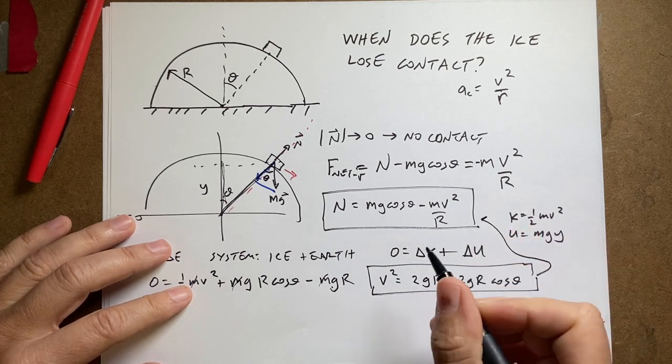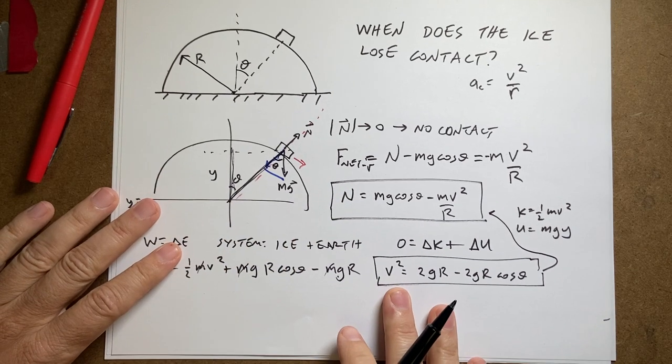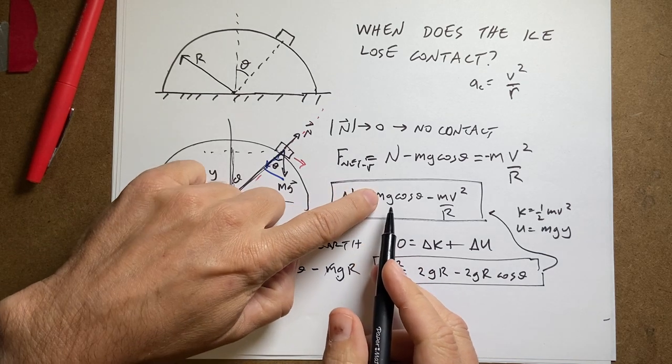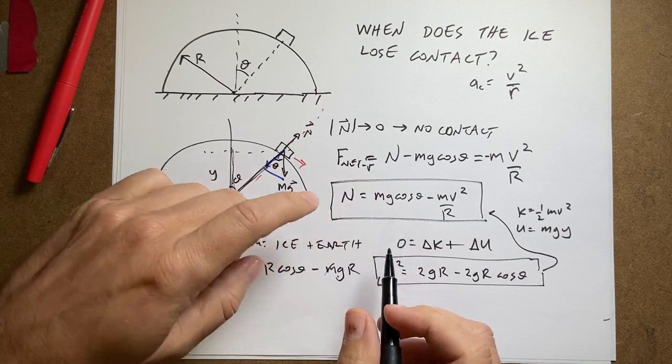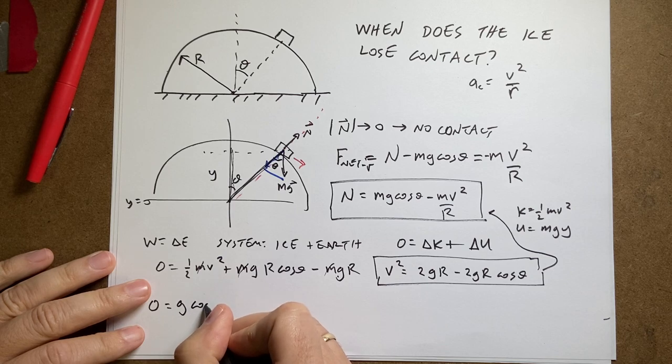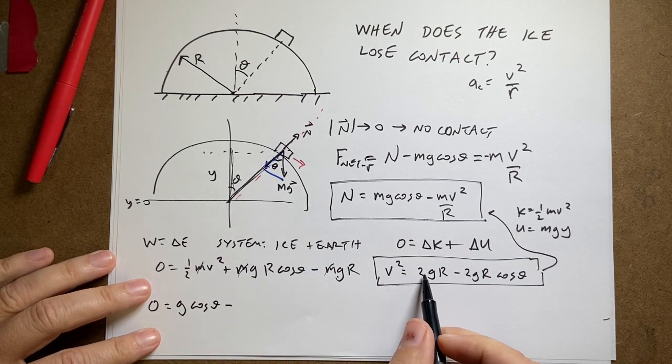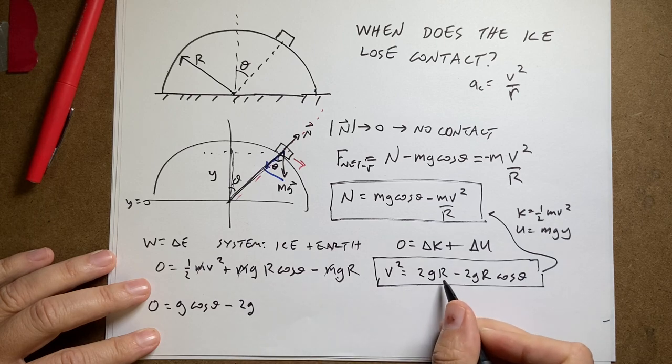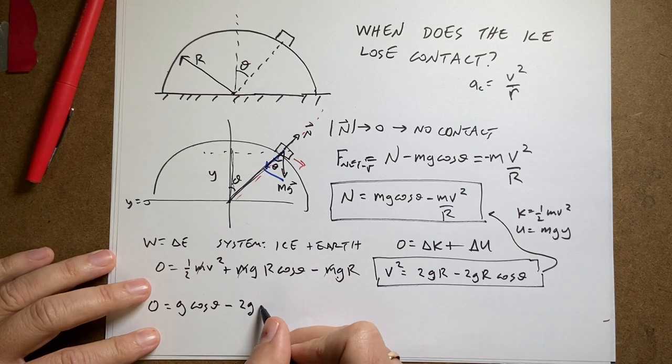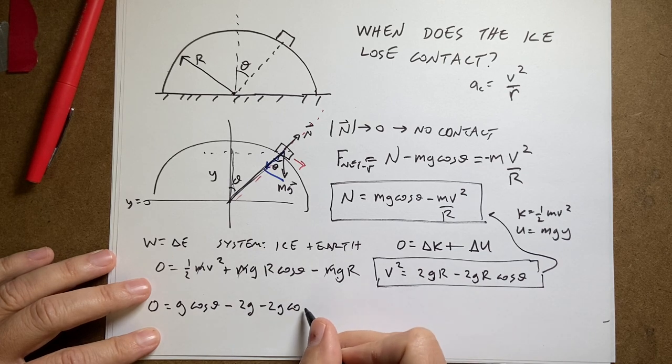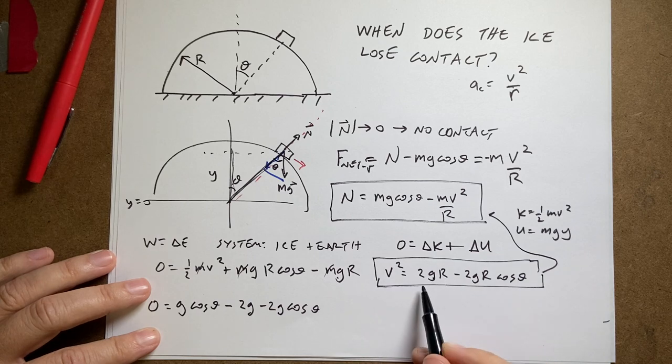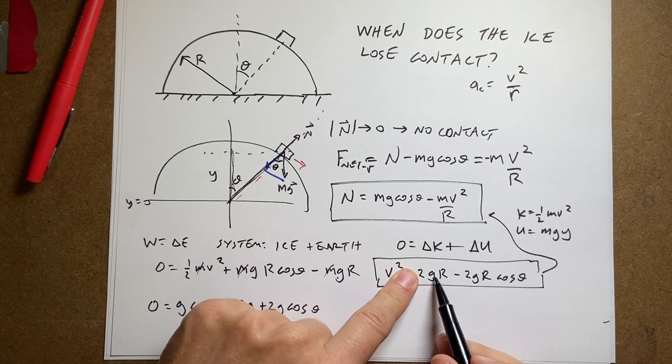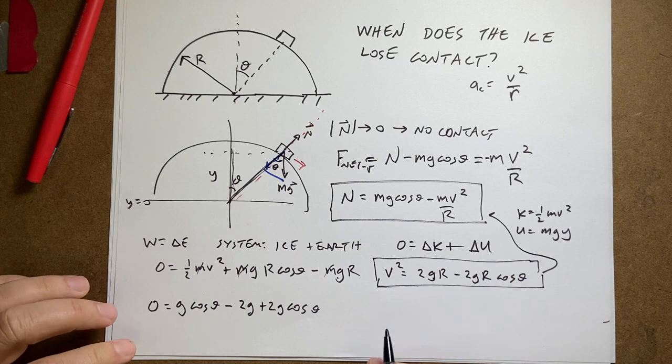So now I can substitute this in up here. And I'm going to set the normal force equal to 0. Because that's when the puck loses contact. So I get 0 equals, and if I put that 0, the m cancels. I can divide both sides by m. So I get 0 equals g cosine theta minus v squared over r. So this is v squared, but I'm dividing by r. So I get minus 2g plus 2g cosine theta. So what do we have here? I can divide everything by g. The g's cancel.